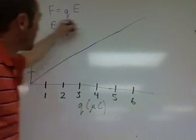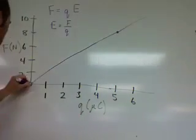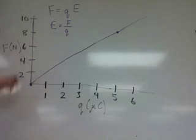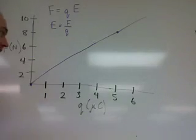So if I try to find two points right there, so my rise is 8, my run is 5 micro coulombs.